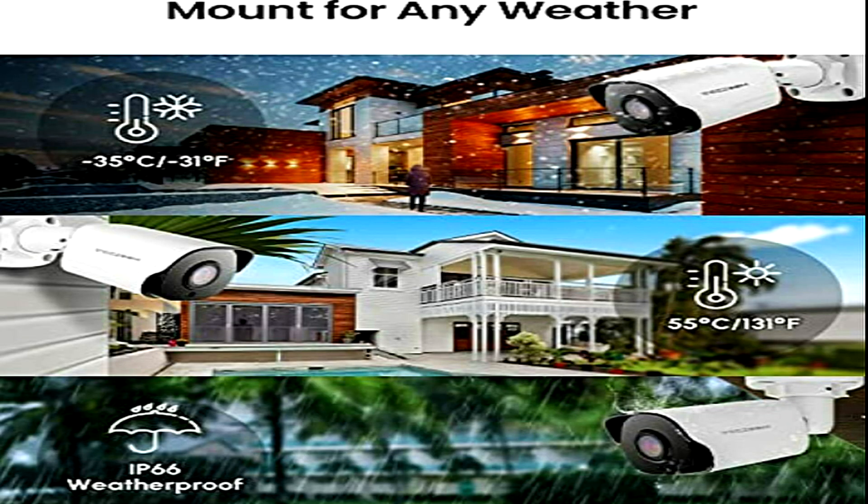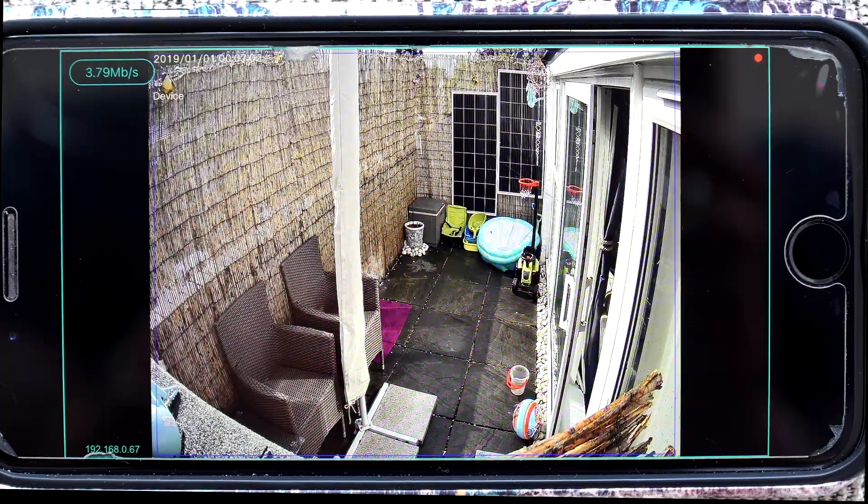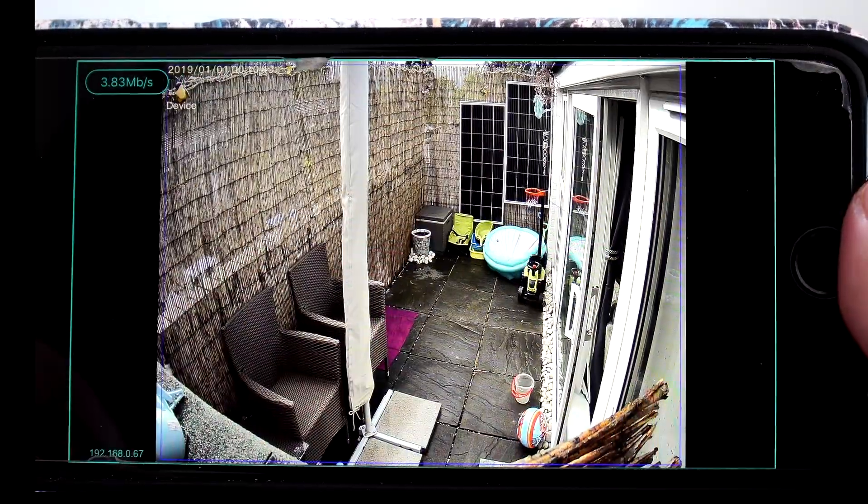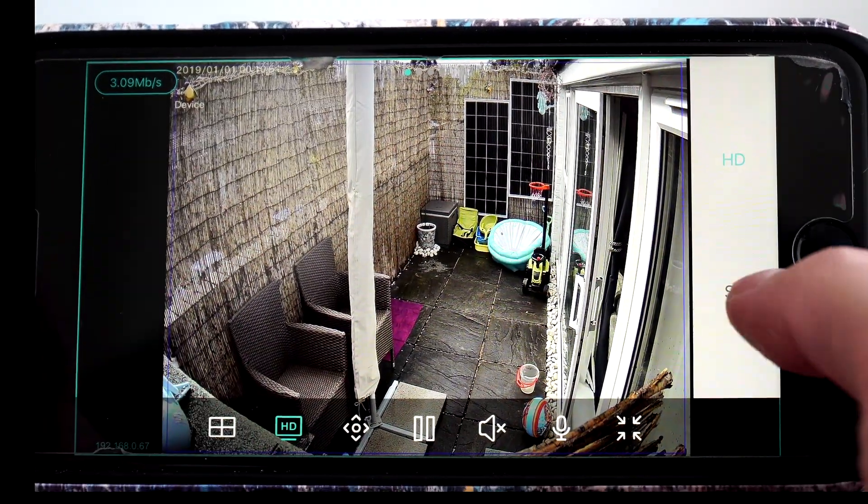As we said, these cameras can be used outdoors. They have an IP66 rating, which they're basically saying can be used in snow, rain or wind, of temperatures to minus 35 degrees and up to 55 degrees.